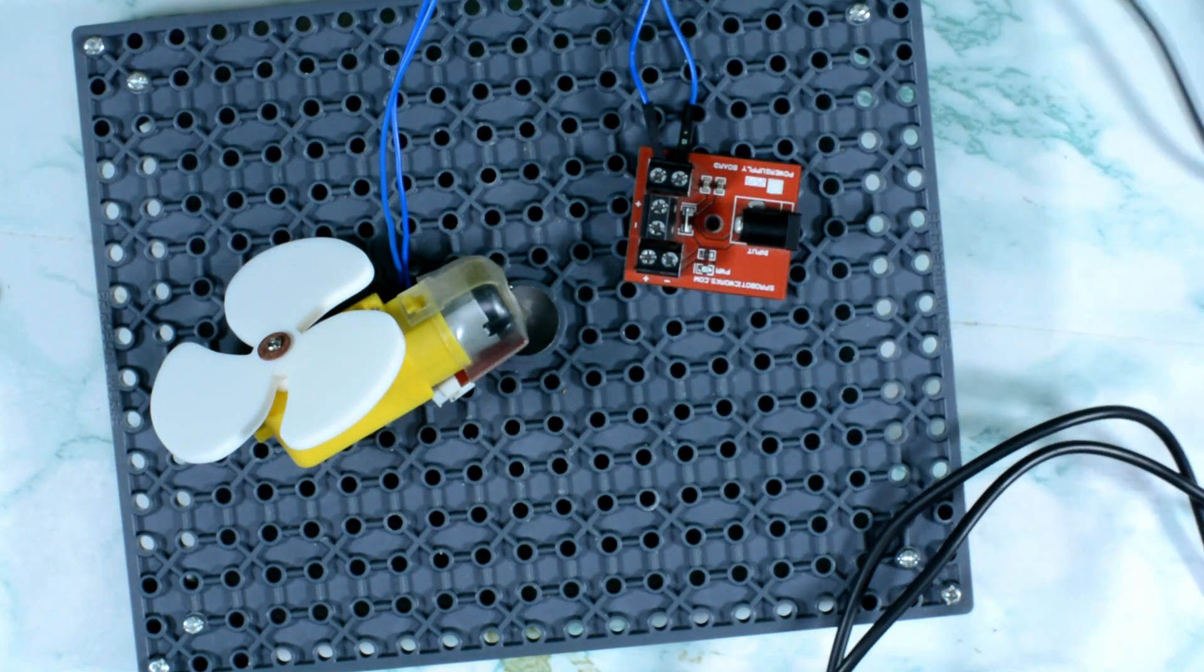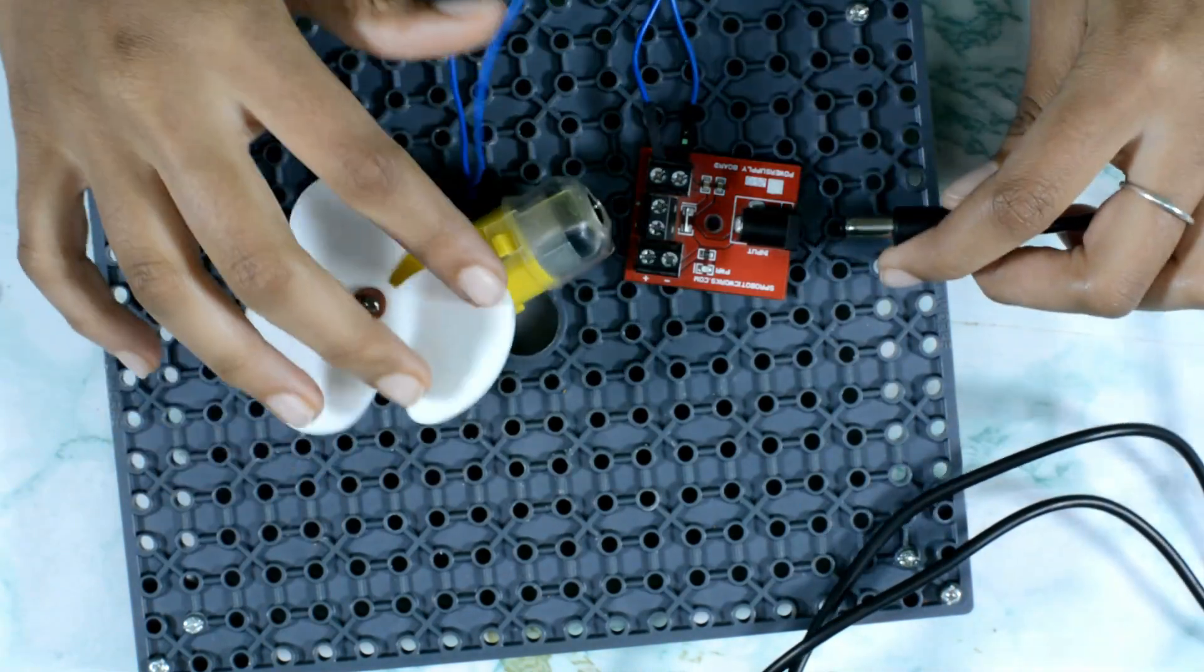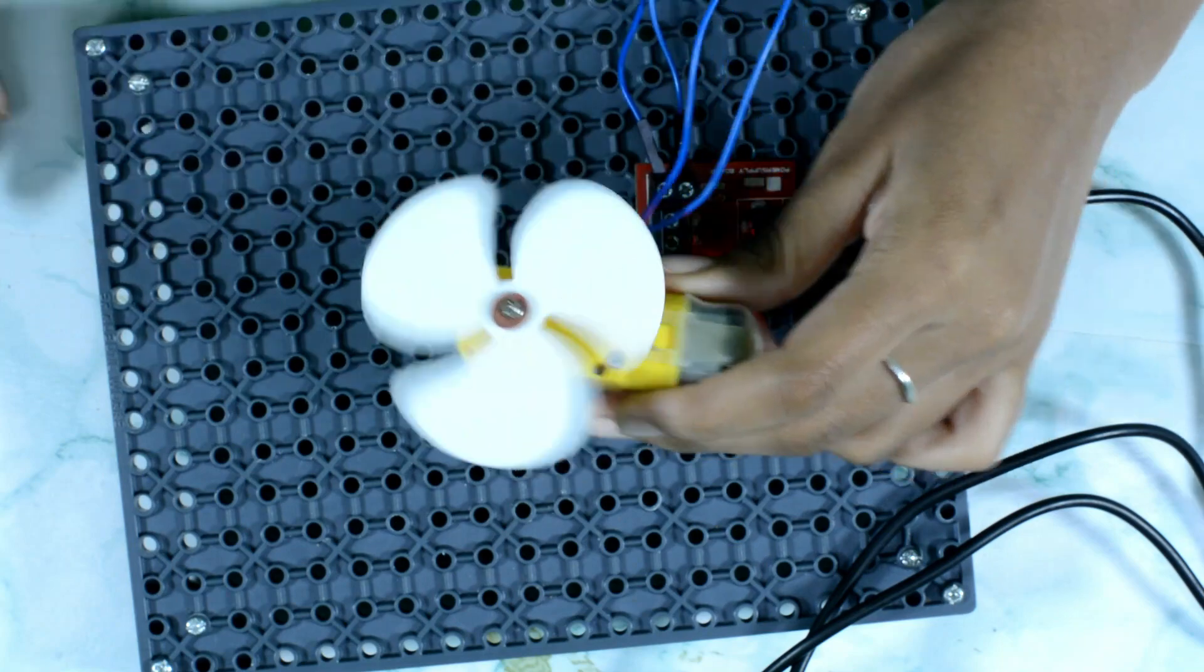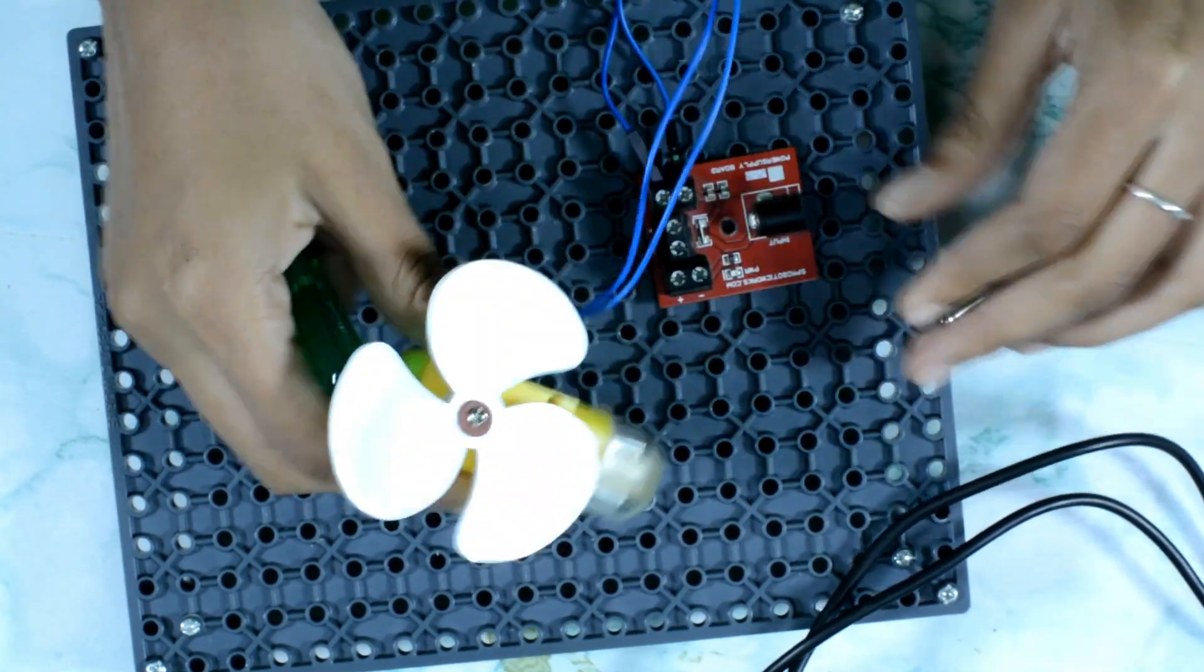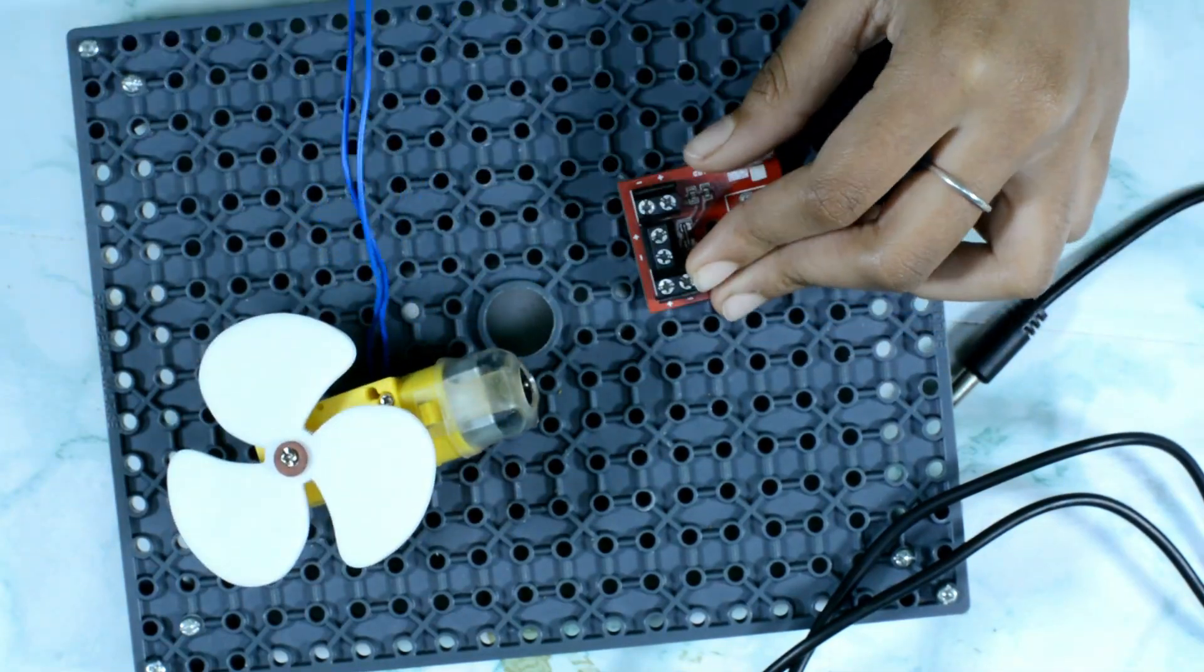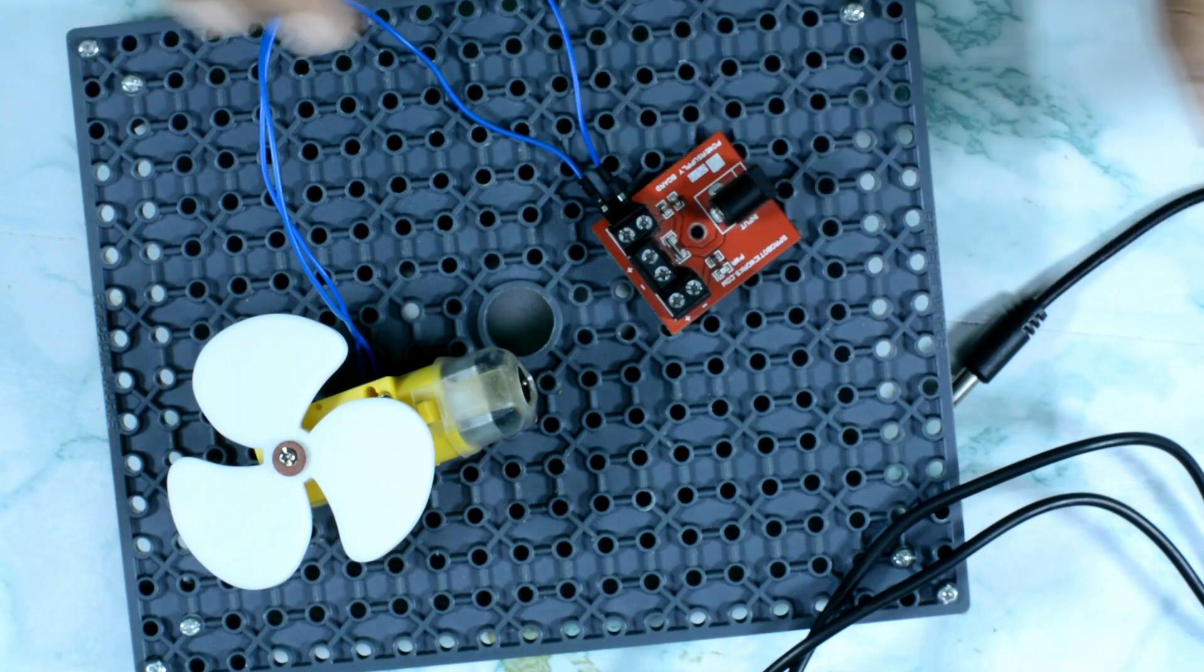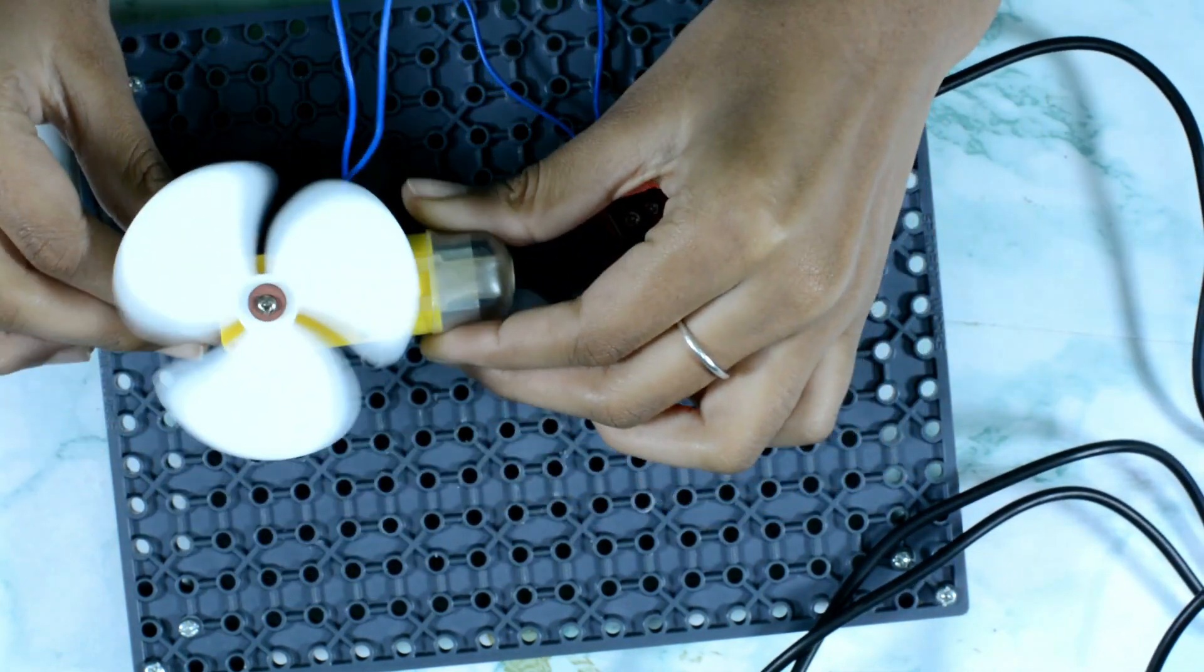And now let's plug this in with the battery. You can see the fan is rotating. Now let's change it and see if it will rotate in the anti-clockwise direction. Now let's supply this with the battery, and you can see it turning in the anti-clockwise direction.